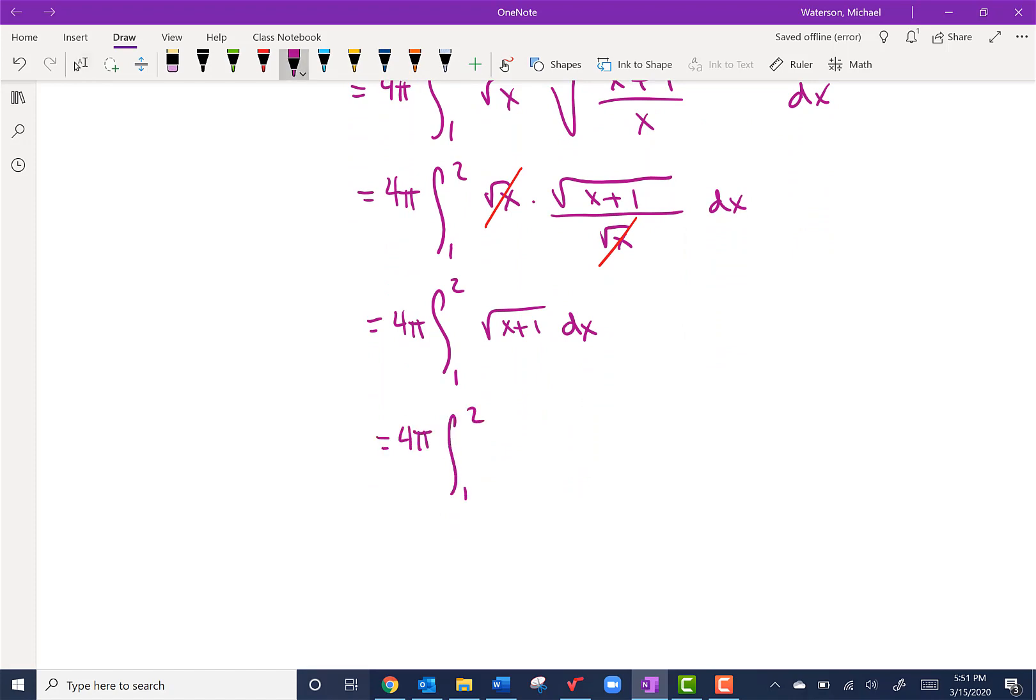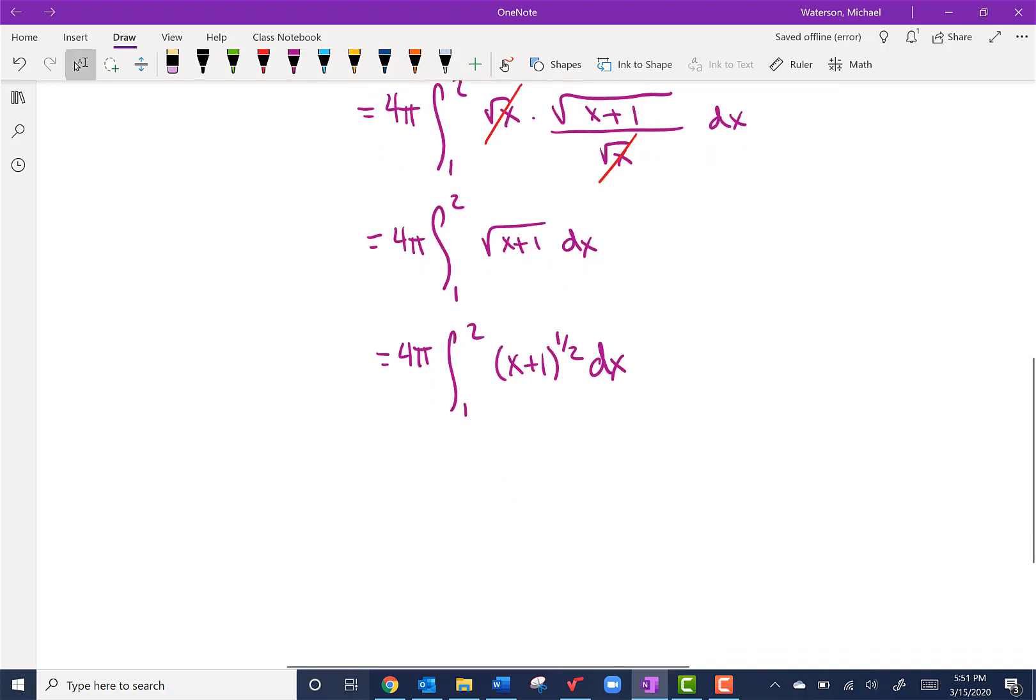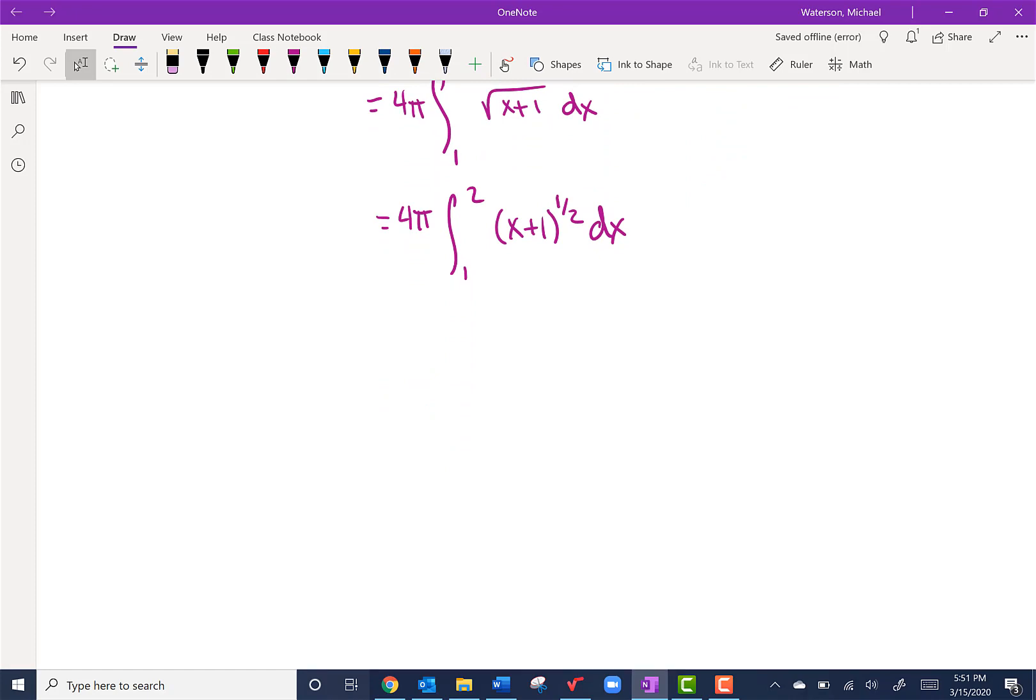One more step. Let's make it easy for us to see and integrate. 4π times—our exponent is 1/2, we're going to add 1 to it, so we get (x + 1)^(3/2), and then we multiply by the reciprocal of that. There we go, so we get 8π/3.